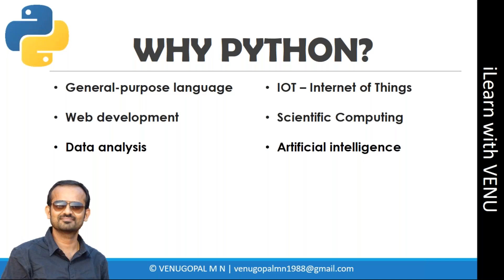Just to give a summary — why anybody in this technological era should go for Python language — Python is a general purpose language. As the name indicates, it is very easy to learn and can be used in any number of applications, from simple academic programming all the way to implementation of artificial intelligence or machine learning algorithms. The application of Python language is very vast, that's why it is called a general purpose language.